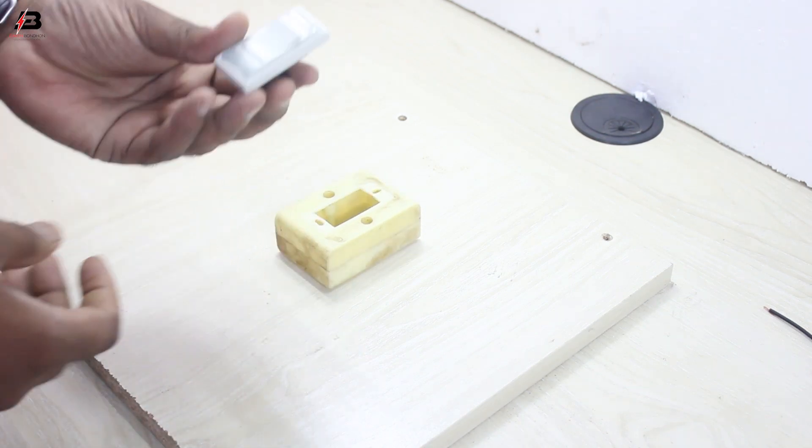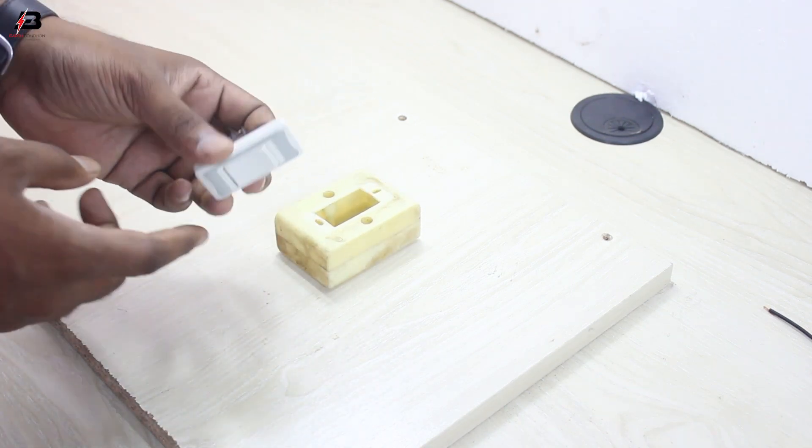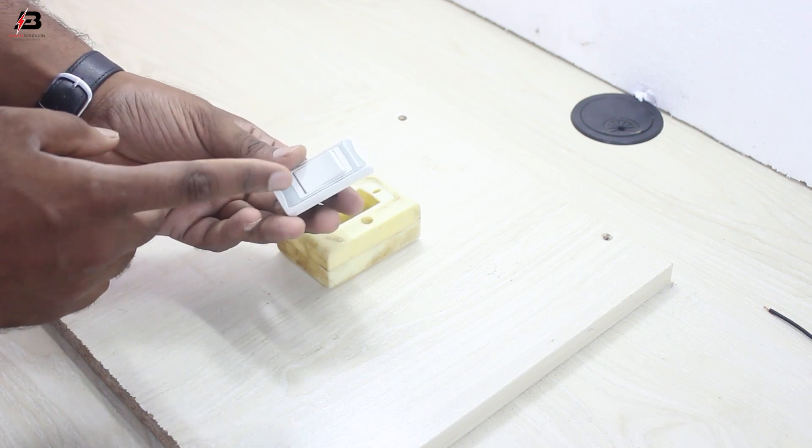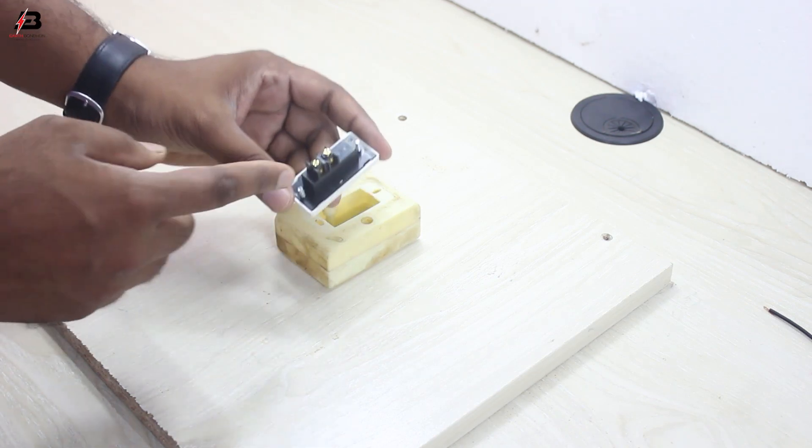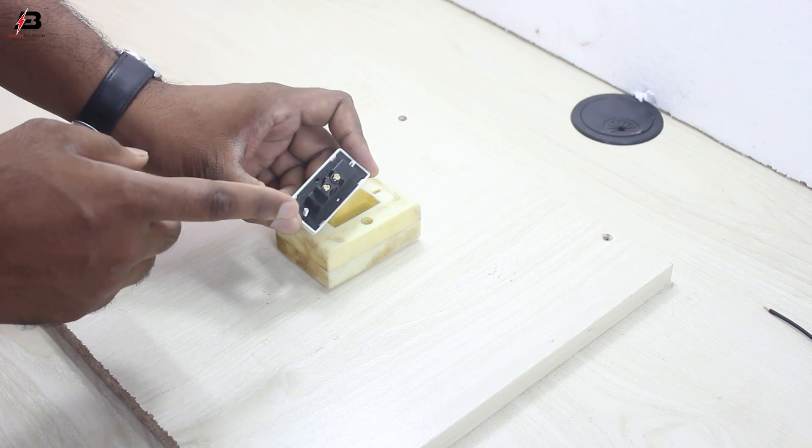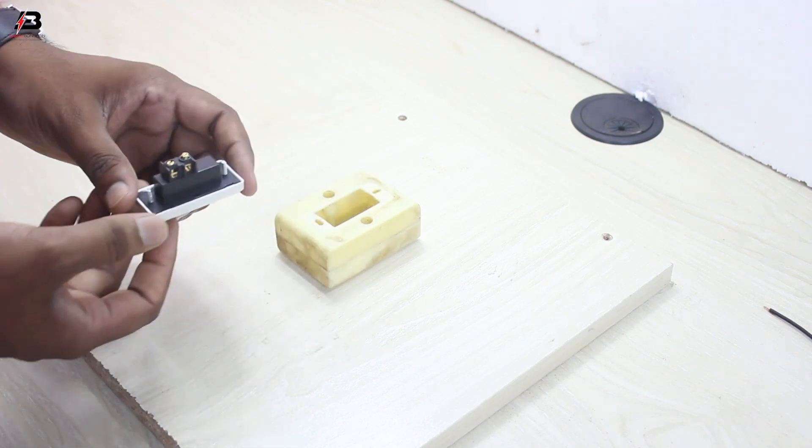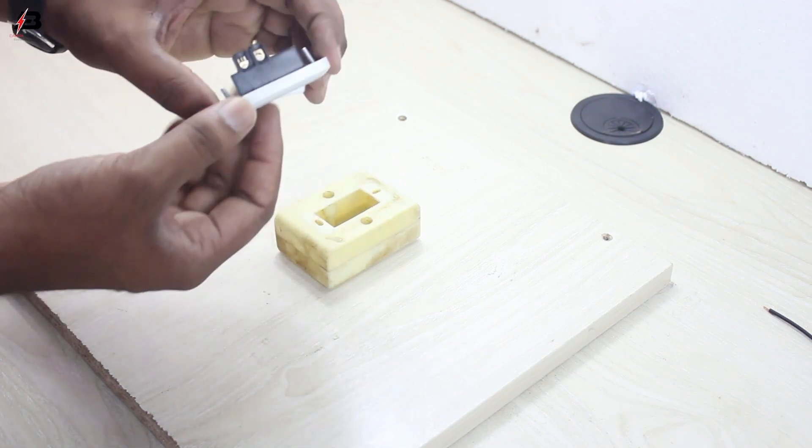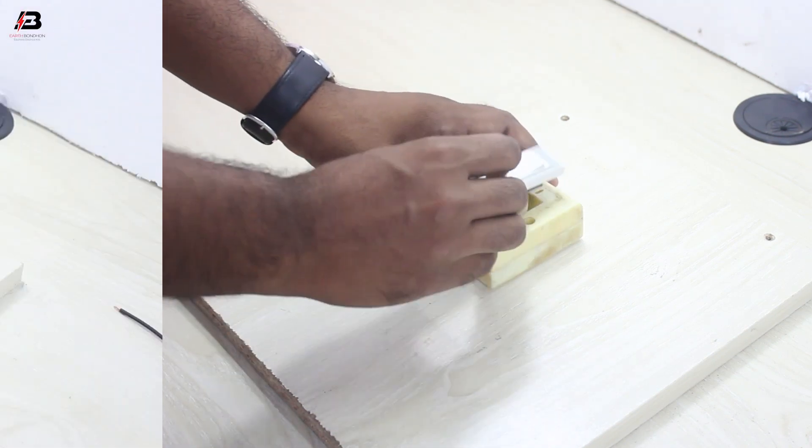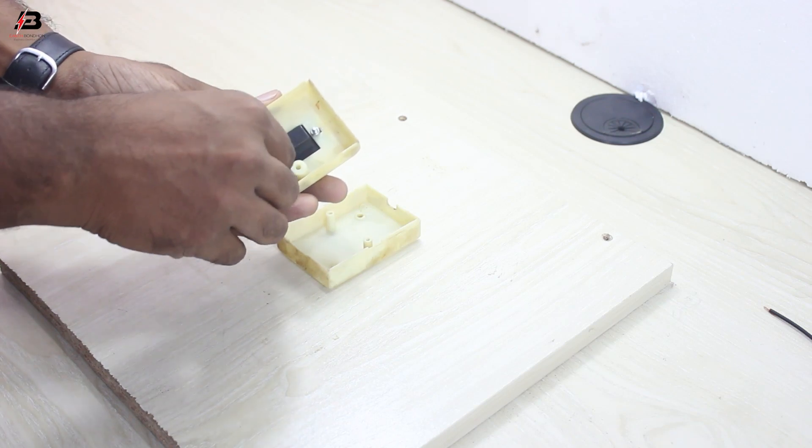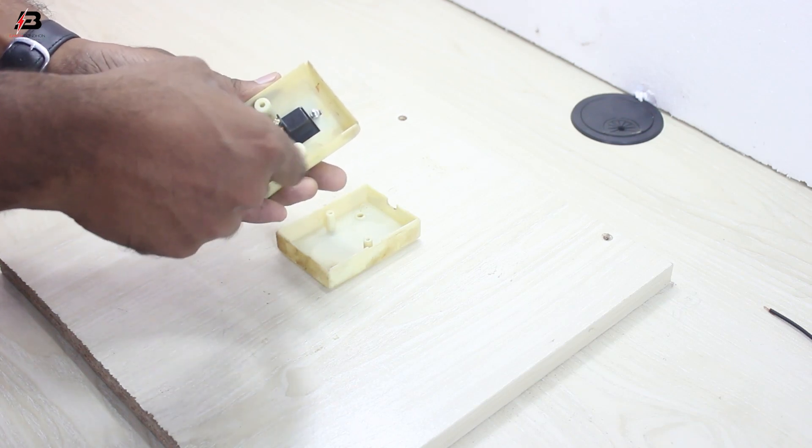And see, that's an SPST switch. On the back side, here are two points—one for source and one for load. Now I'll connect this switch to the box. Please be careful when using all components because any mistake can be dangerous.